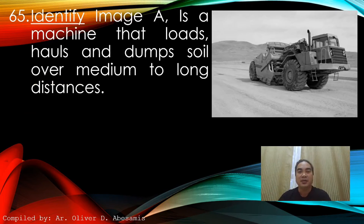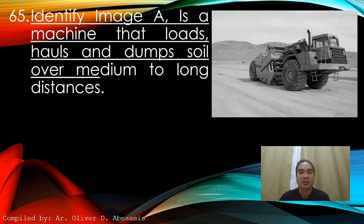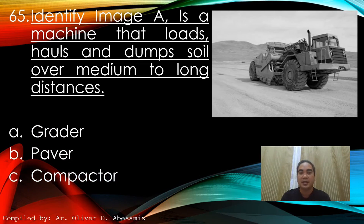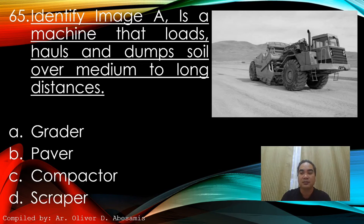Identify the image. This is a machine that loads holes and dumps soil over a medium to long distance. A. Grader. B. Paver. C. Compactor. D. Scraper. Answer: D. Scraper.